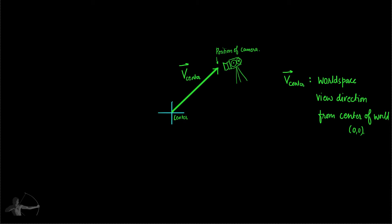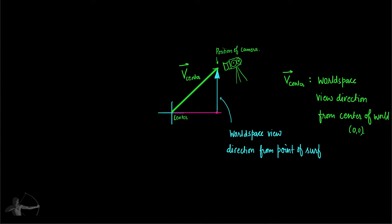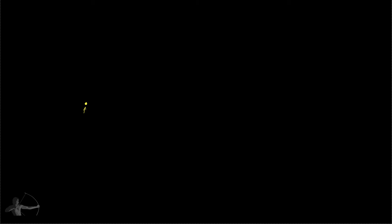But we will have to calculate the view direction from a point on the surface which is located somewhere in world space. The direction from this point on the surface to the camera position is what we need — that is the world space view direction from the point of surface. So let's simplify this diagram and keep only what we need for the calculation. Consider this is the center of the world at (0, 0) and this is vector v from the center of the world.